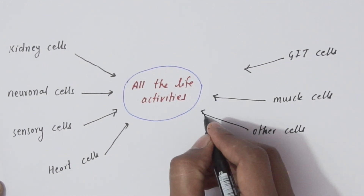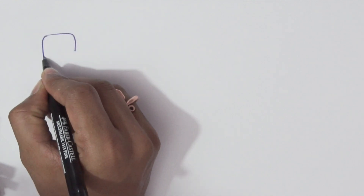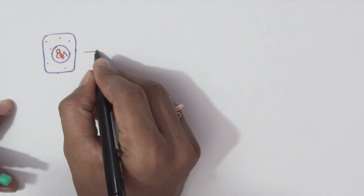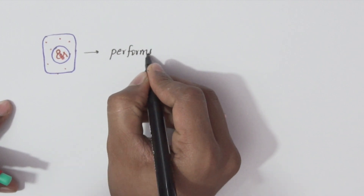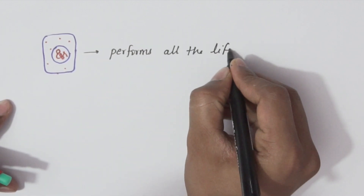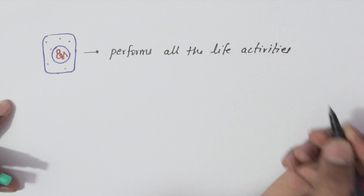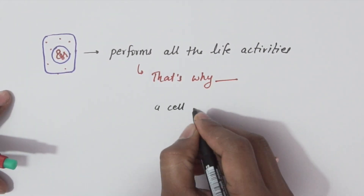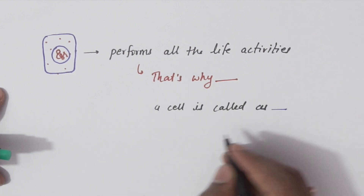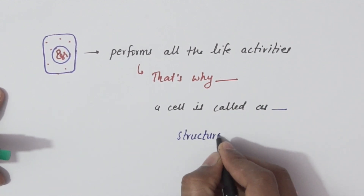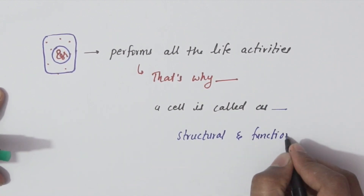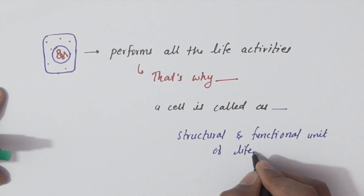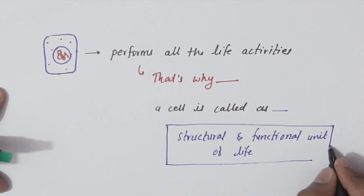In a unicellular organism, a single cell can perform all the life activities. That is the reason the cell is considered as a structural and functional unit of life.